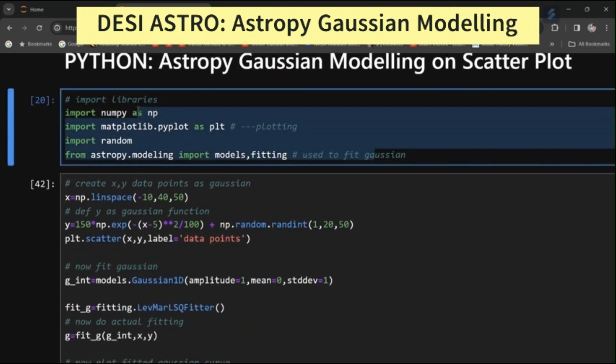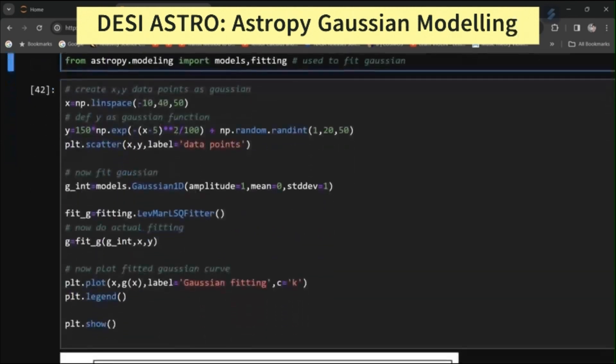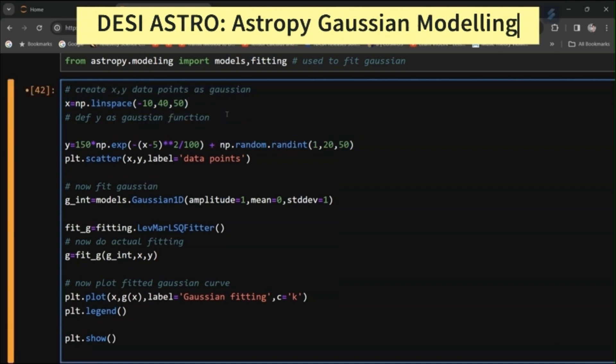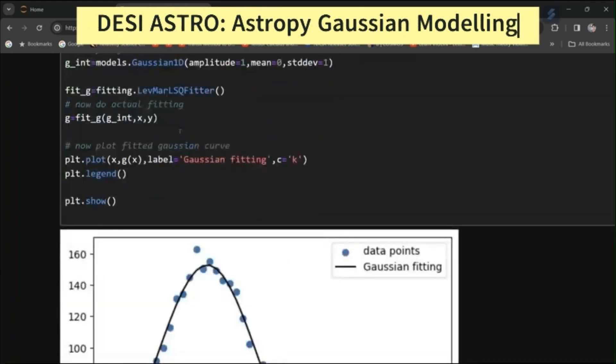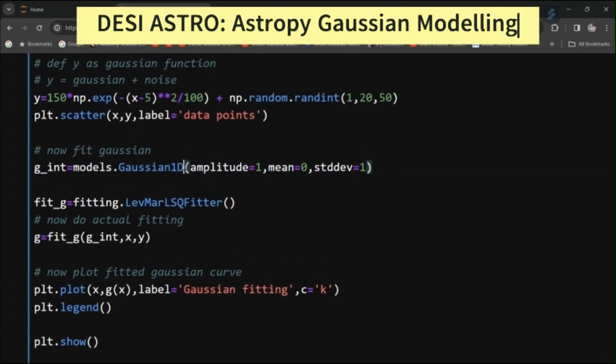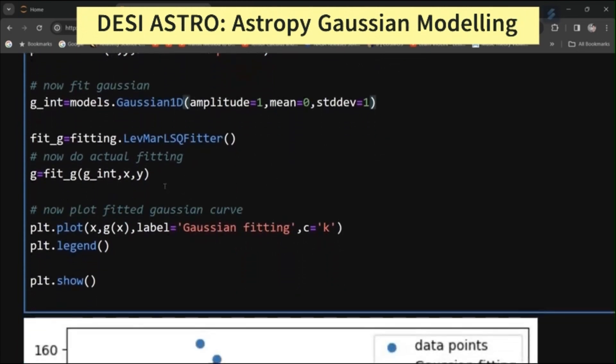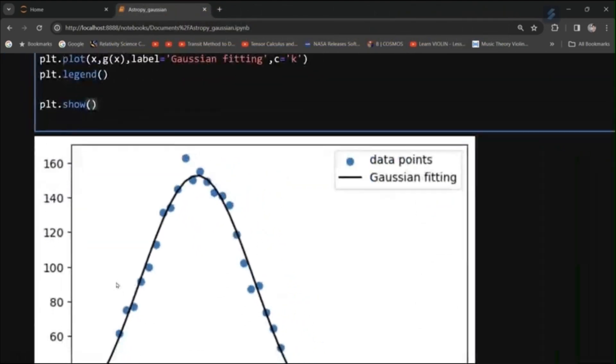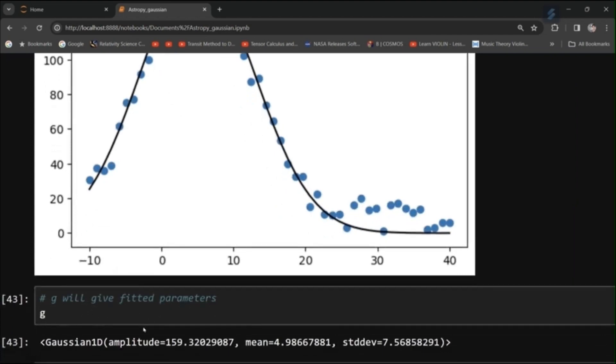I have imported some libraries: numpy, matplotlib, random module, and Astropy modeling and fitting. I have defined x data, defined y data as Gaussian plus noise. After that, I have initialized the model as Gaussian. I have given some amplitude, mean, and deviations. Then I have initialized the fitter, and then I have actually done the fitting, and then I have plotted the fitted model. And here are the fitted parameters. Thank you.